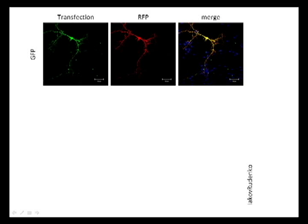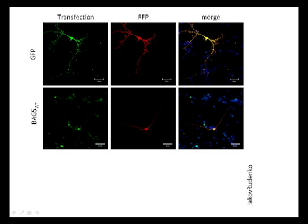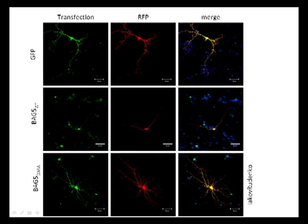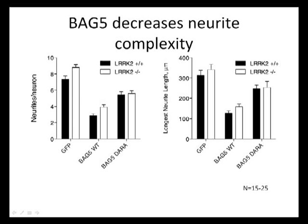At the top is the control GFP. Below that, our interacting protein BAC5 also mimics the neurite shortening effect — you can see that neuron in the center, transfected with both BAC5 and red fluorescent protein, has much decreased neuritic complexity. Then finally, a mutant of the BAC5 interactor that doesn't recruit heat shock proteins again restores that complexity.